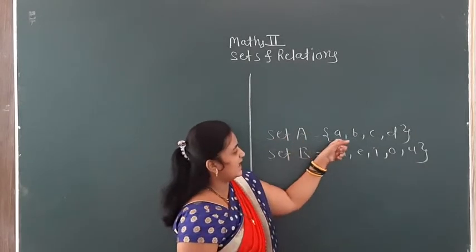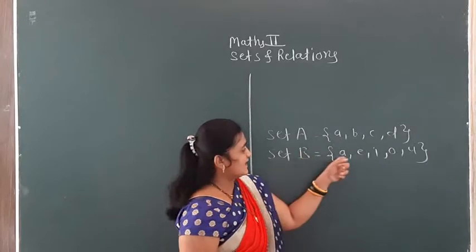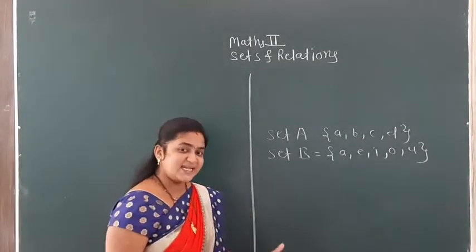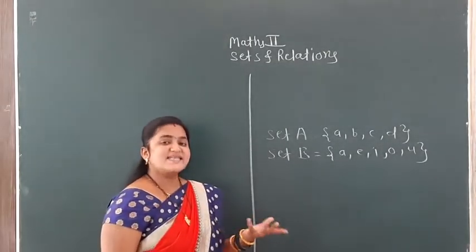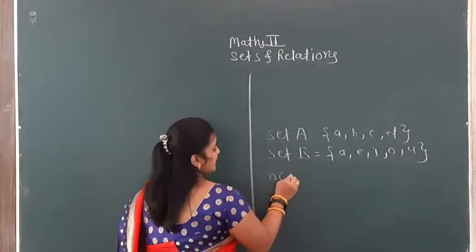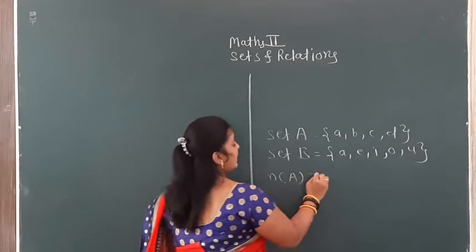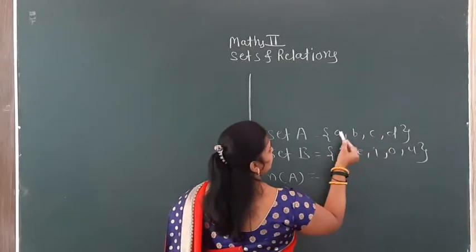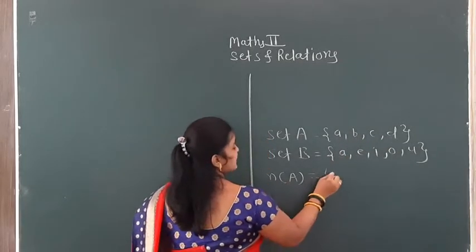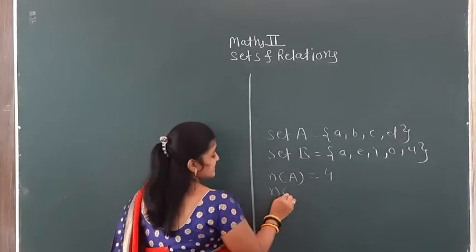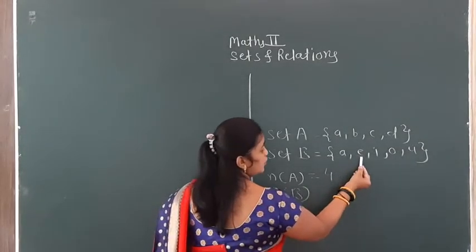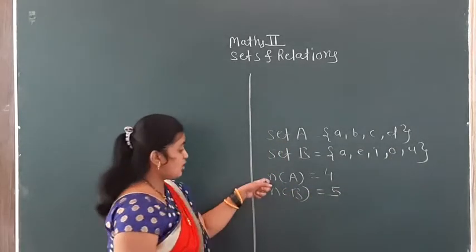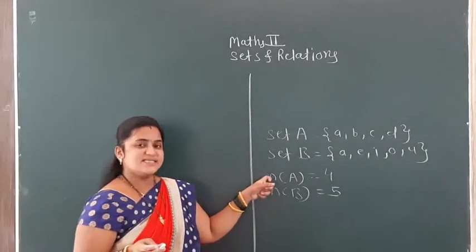Set A contains a, b, c, d and Set B contains a, e, i, o, u. The number of elements in Set A — the size of Set A — is denoted by N of A. Counting the elements: a, b, c, d means 1, 2, 3, 4. So number of elements in Set A is 4. Number of elements in Set B is 5. This is also called the cardinality of a set.